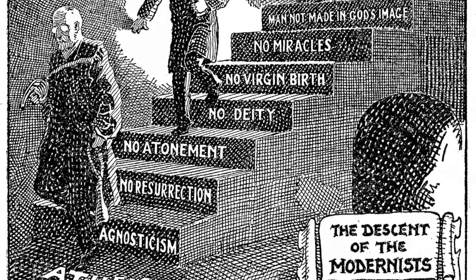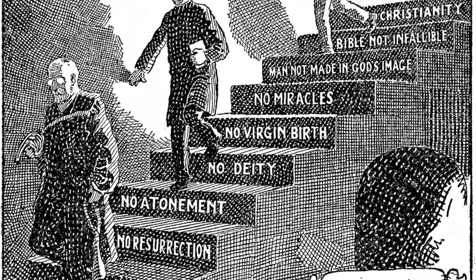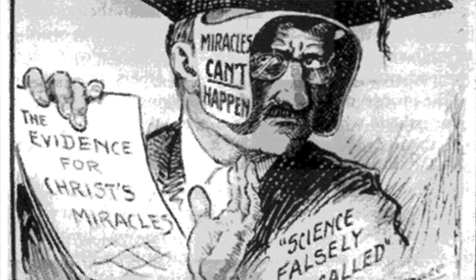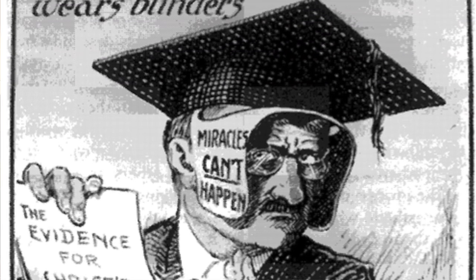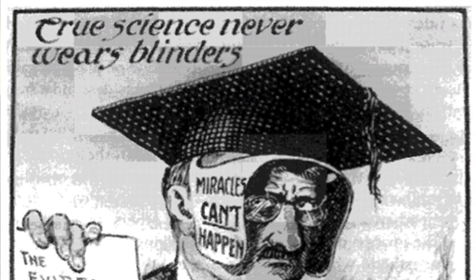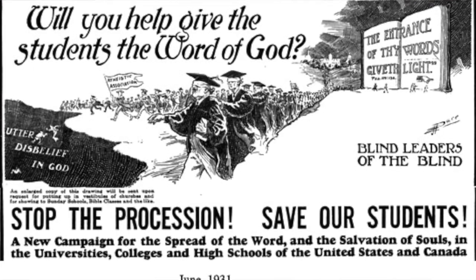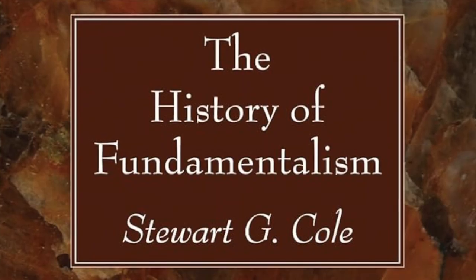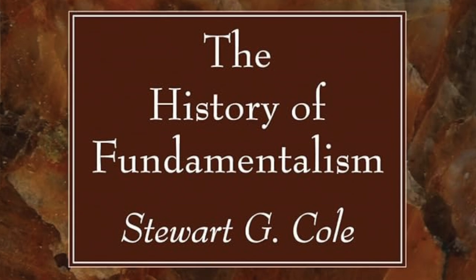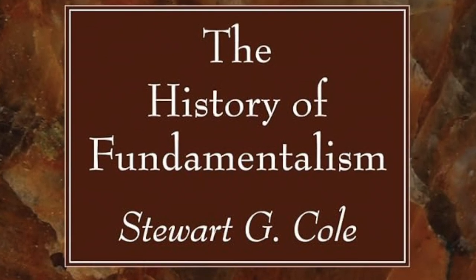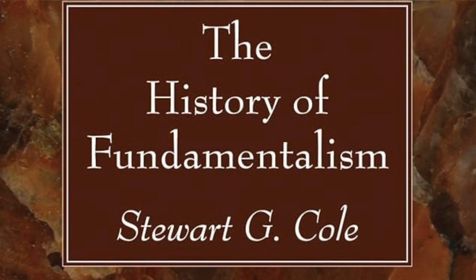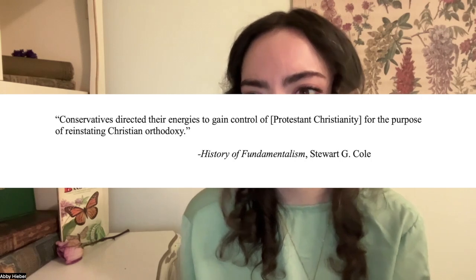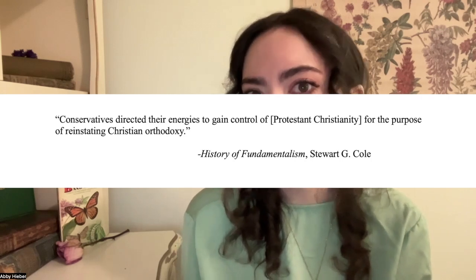To begin, the fundamentalist-modernist controversy arose from a broader struggle between traditional Christian values and modern scientific theories. The controversy occurred in the 19th and 20th centuries, concerning how individuals interpreted the Bible and how these sacred beliefs came up against secular literature, scientific discoveries, and modern knowledge. In his 1931 book, The History of Fundamentalism, Stuart G. Cole investigates the conflict across these denominations and noticed that consistently conservatives directed their energies to gain control of Protestant Christianity for the purpose of reinstating Christian orthodoxy.